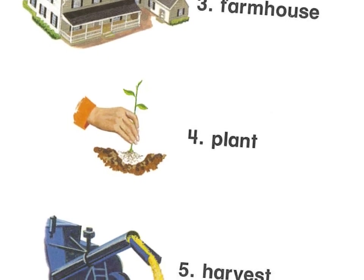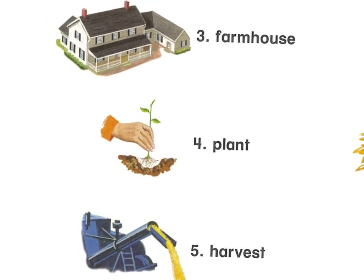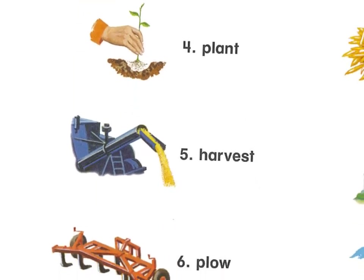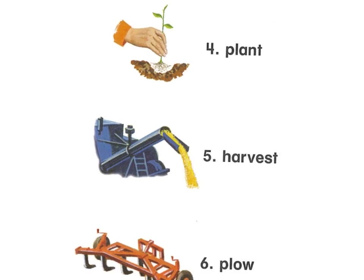A plant is a noun, but 'planting' is a verb — the person is planting the plant, so planting crops. Harvest — this is grain that has been grown, picked, and is ready to be made into food. That process is called harvesting.